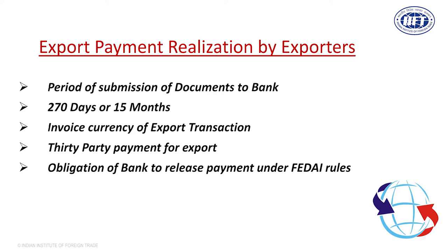Reserve Bank of India has changed the rules regarding third-party payments. For example, if you are exporting to a buyer in Tanzania, you can arrange for payment to be made by a company in the UK — third-party payment for exports is allowed, but two or three formalities must be completed. The invoice must mention that the Tanzanian party is the buyer but payment will be made by the UK party, and the same information has to be declared on the shipping bill.